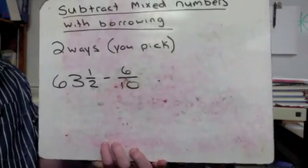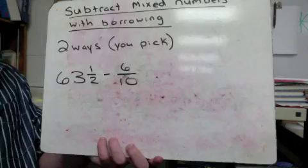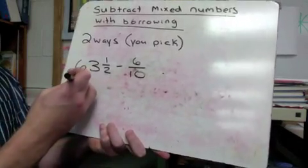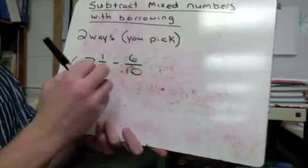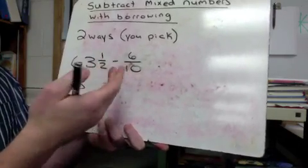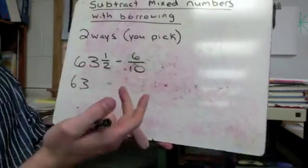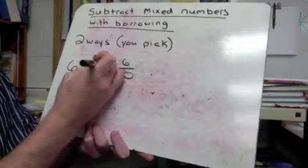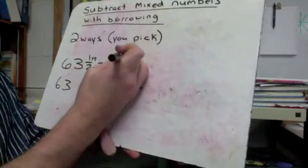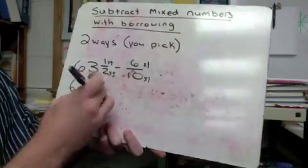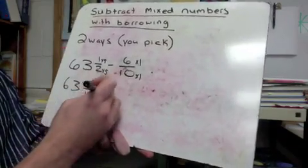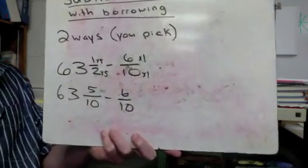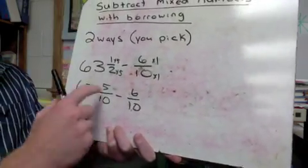Last example before I let you try some on your own: sixty-three and a half minus six-tenths. Let's get common denominators. I'm going to use ten, since two and ten both go into ten. That would be times five for the top and bottom of one-half, giving five-tenths. The six-tenths side is times one and times one, so it stays exactly the same. Now our problem is we can't do five minus six, so we need to do some borrowing.